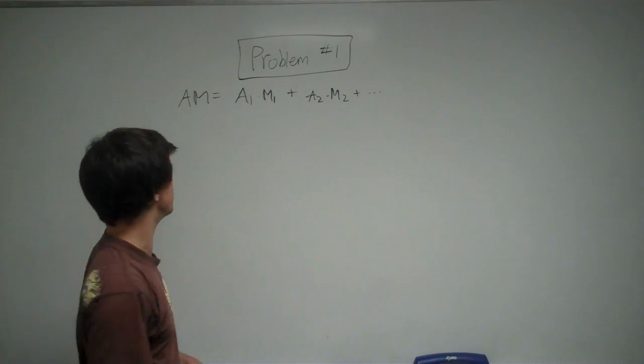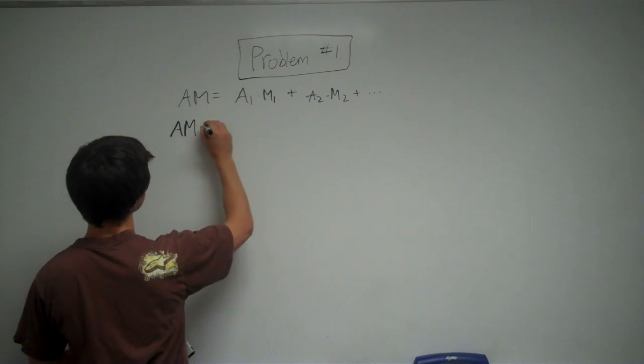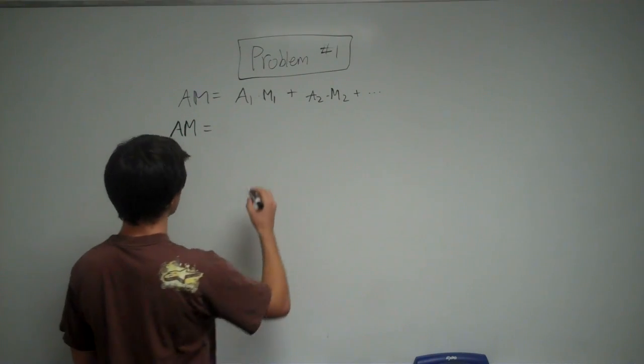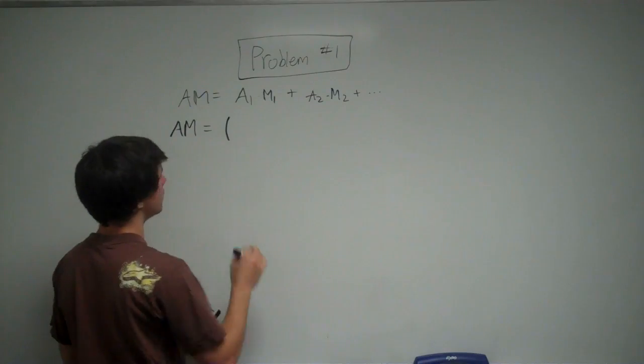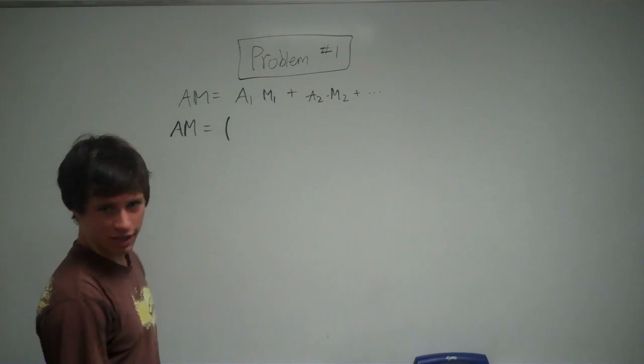So the atomic mass of X equals the abundance of the first one. We're going to put it in decimal form instead of percentage.